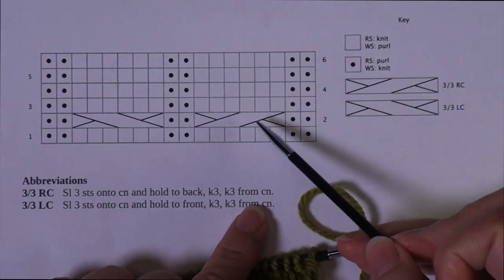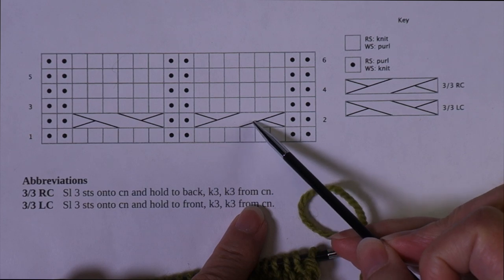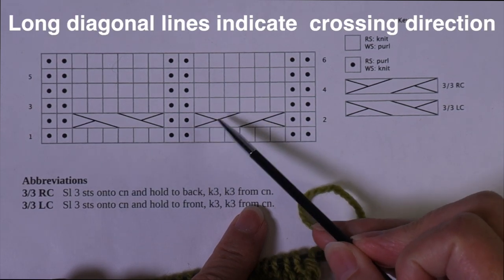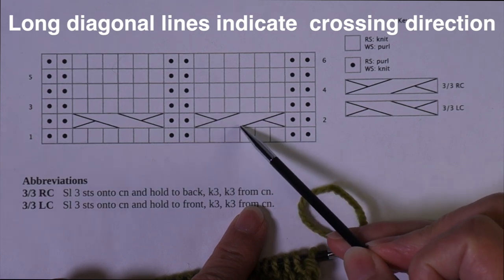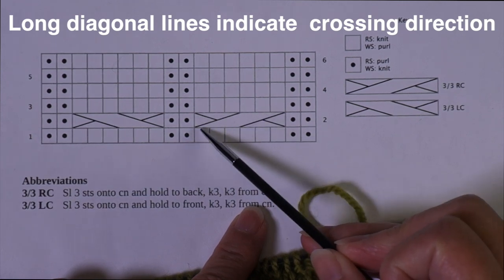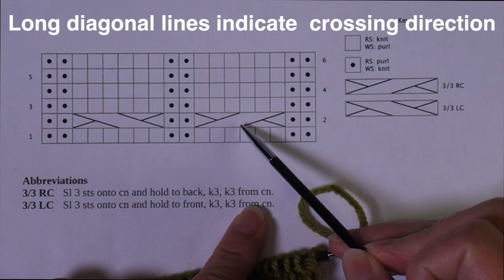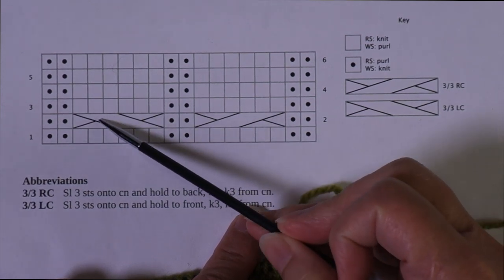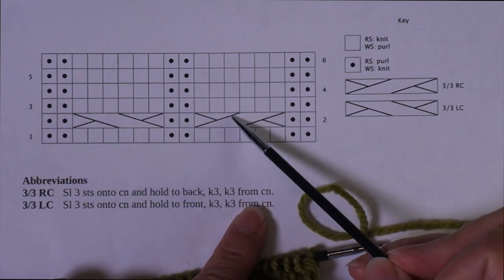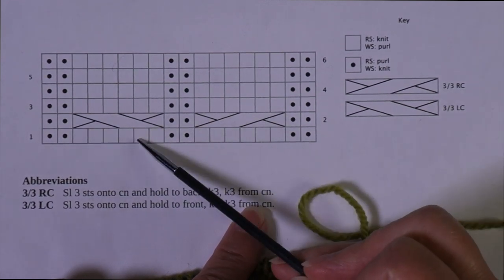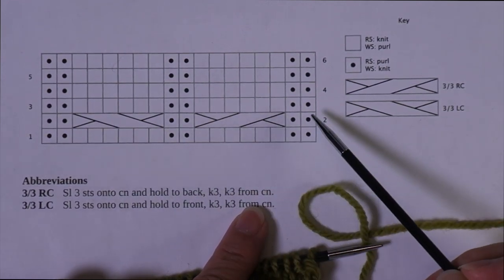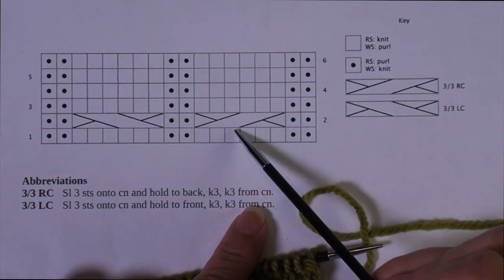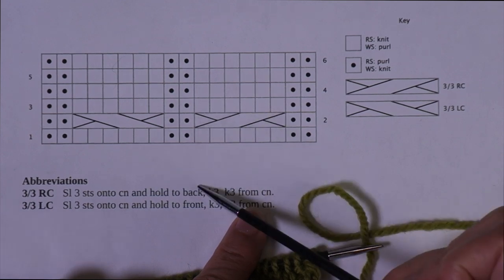You're going to look at the long diagonal lines first. You can see right here that these are leaning to the right, and you can see here that these are going to the left. So that's an indication of which direction the cable crosses. If you're looking at the chart and can't remember whether it's supposed to be right or left, you look at the diagonal lines.